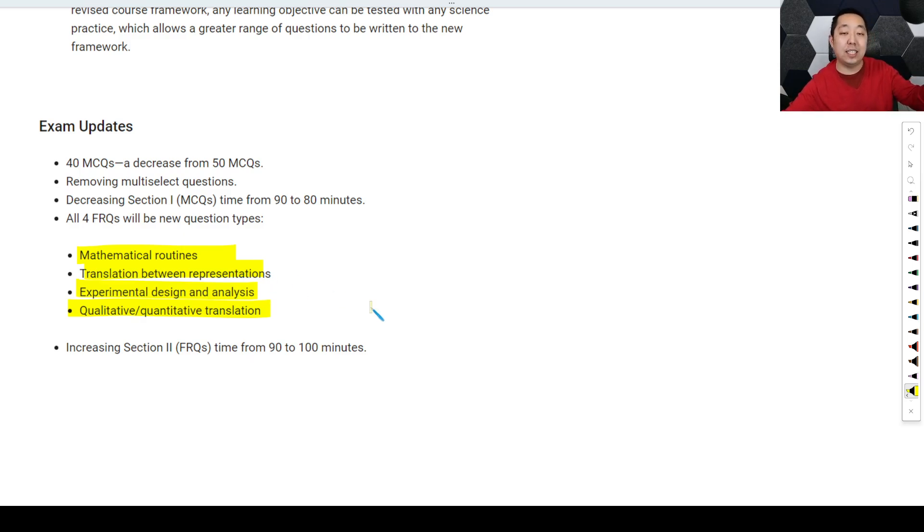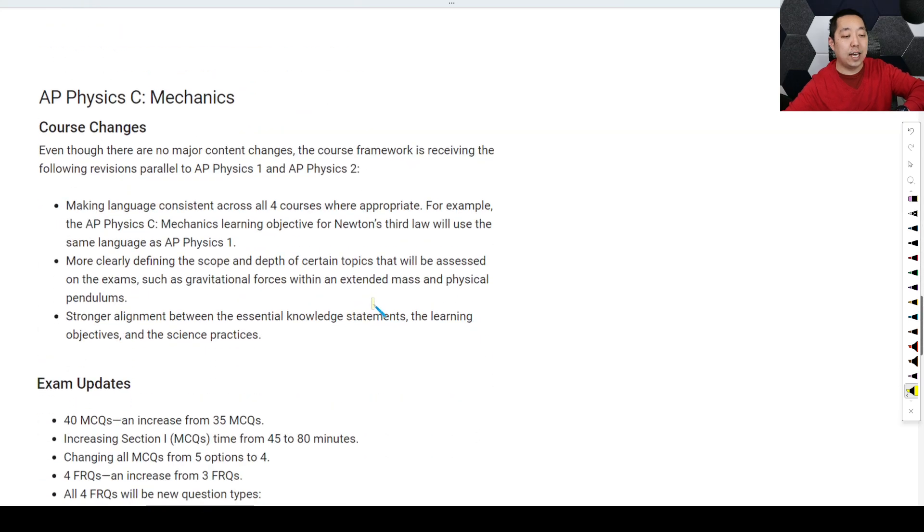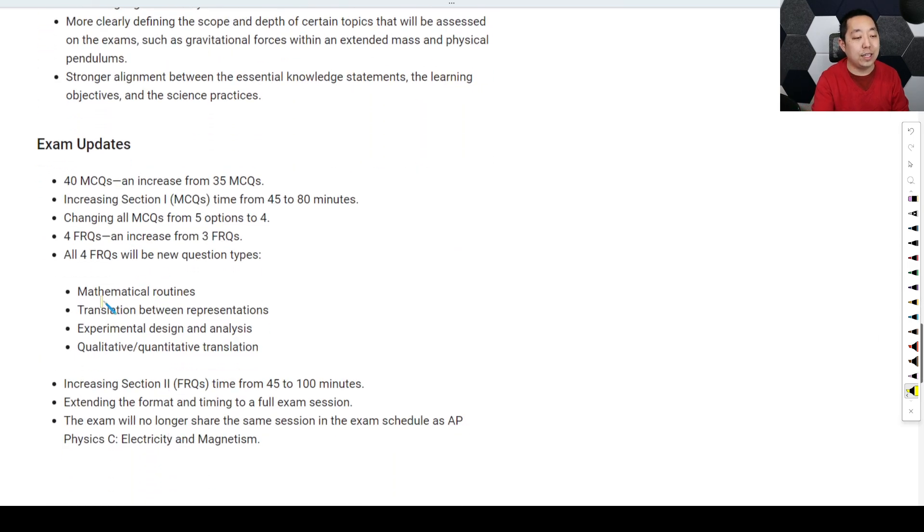That's probably the biggest change that leads us into AP Physics C, is that there's no real content changes, but we are doing the exact same things that AP Physics 1 and 2. So now there's an alignment between AP Physics C exams and AP Physics 1 and 2 exams, to make them more similar. You guys are getting a huge change in timing. In order to align with the AP Physics 1 and 2, you went from 40, you're going to go from 35 to 40. But look at this, you're doubling your time here.